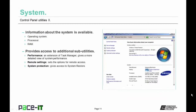The Systems utility is another important one for the technician. From it, information about the system is available — the operating system, processor, and amount of RAM. It also gives access to additional utilities like Performance, which is an extension of Task Manager providing a more detailed view of system performance. From Remote Settings, you can set options for remote access. The System Protection utility allows for System Restore.